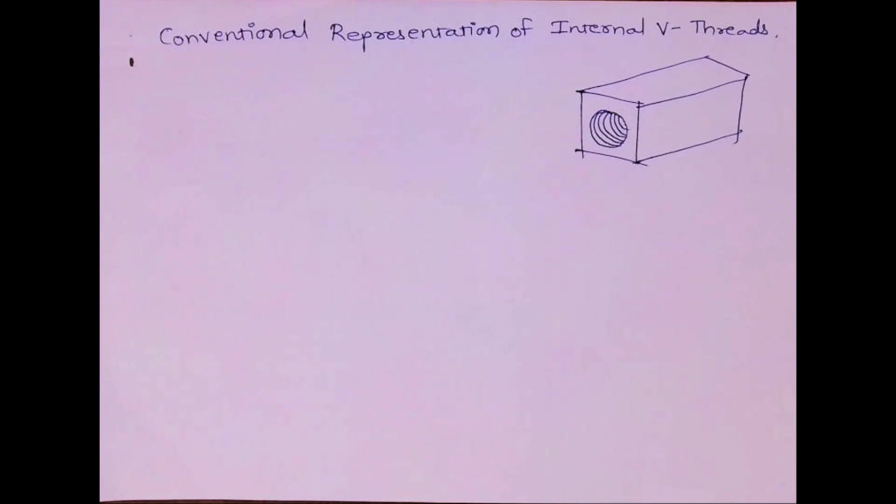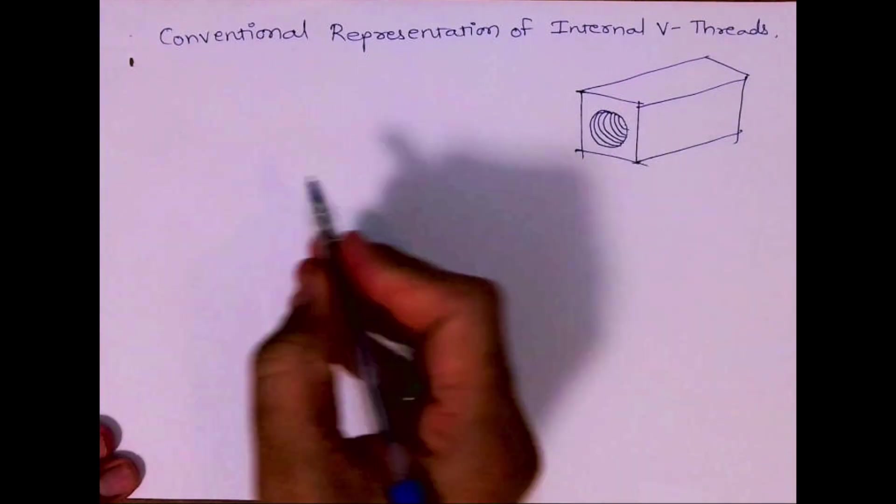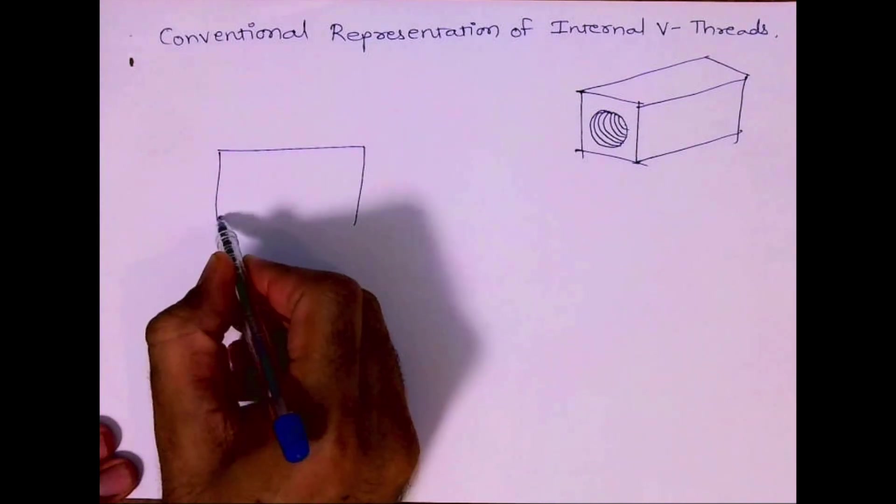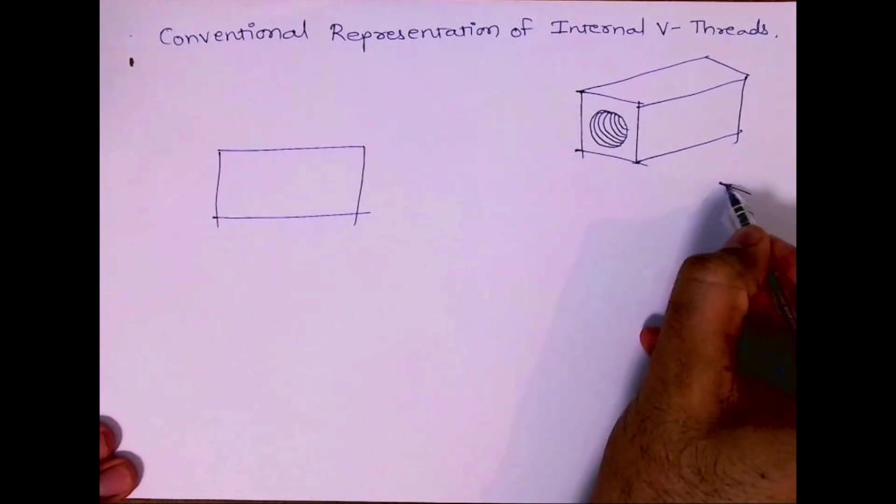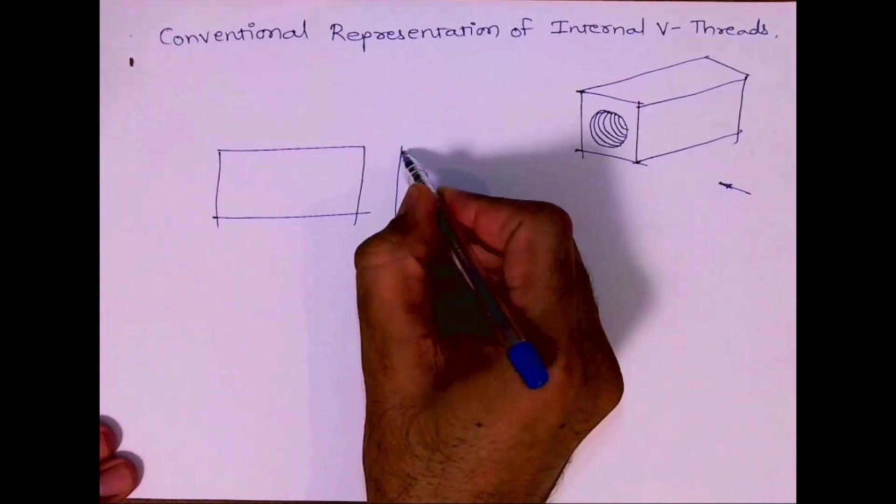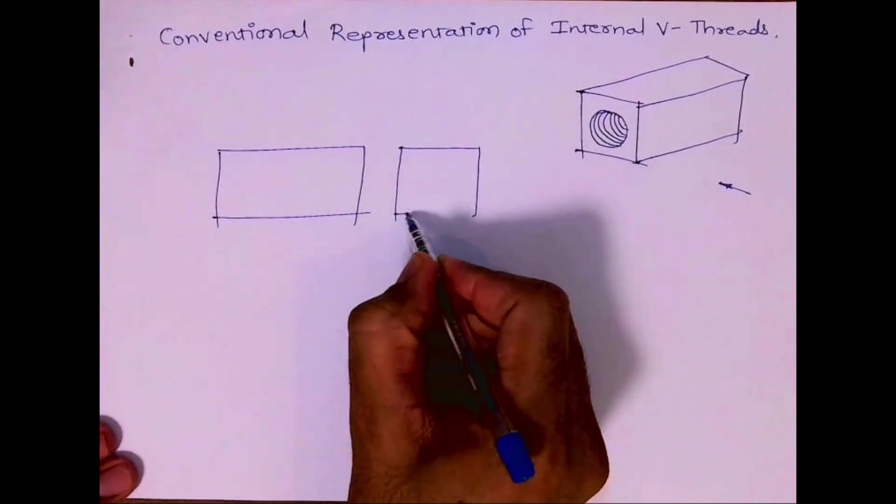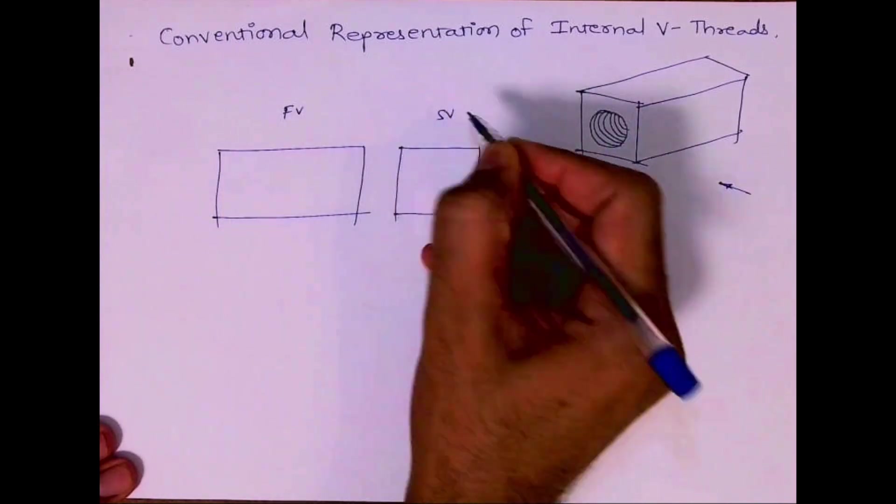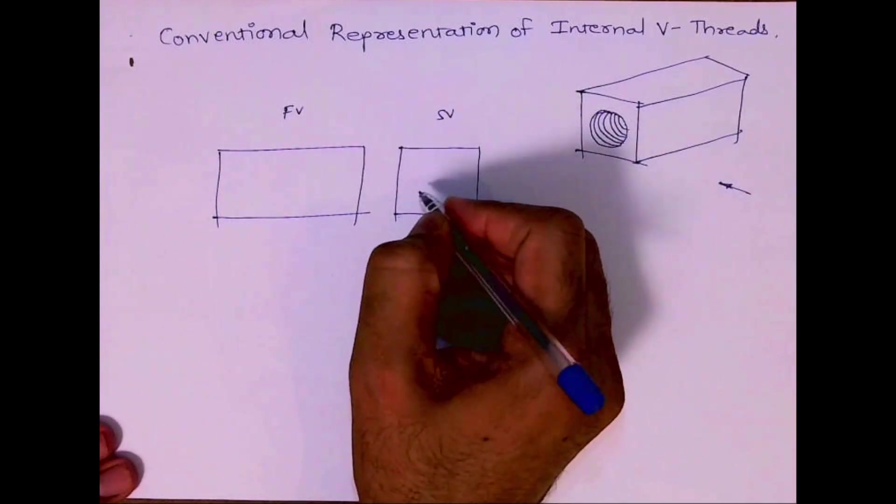Welcome to technical drawing. Today we learn how to draw conventional representation of internal V threads. See, in this a box is there with internal threading. In front view I will see a rectangle, inside view I will see a rectangle or square. This is front view, this is side view. Inside view you'll draw a circle.